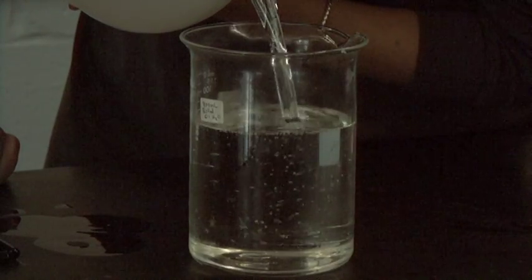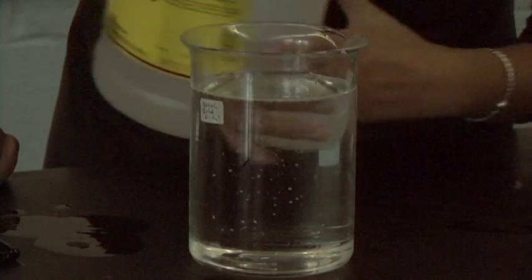The oil and the Pyrex beakers reflect light in the same way, which is why you can't see the beaker on the inside.